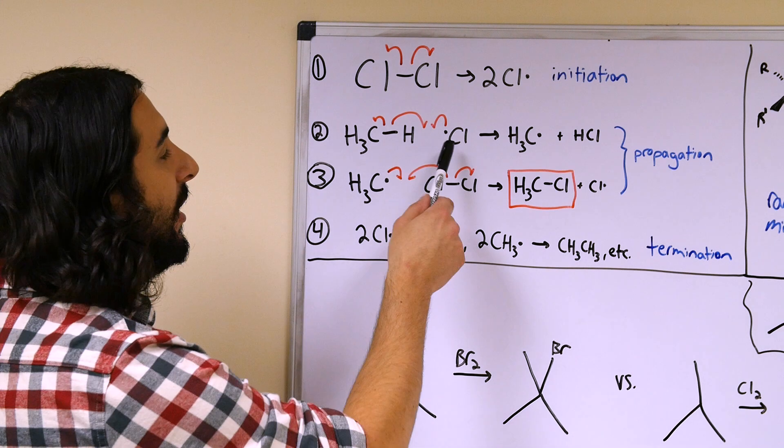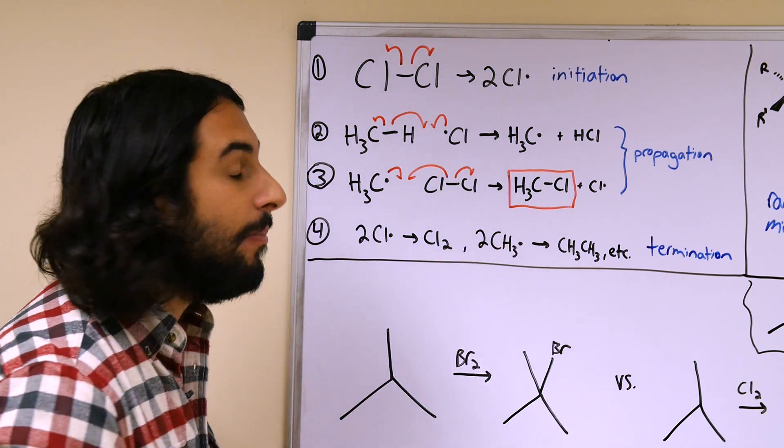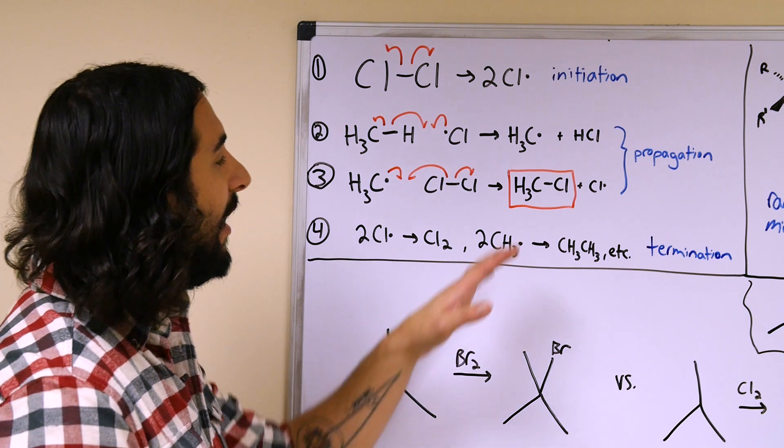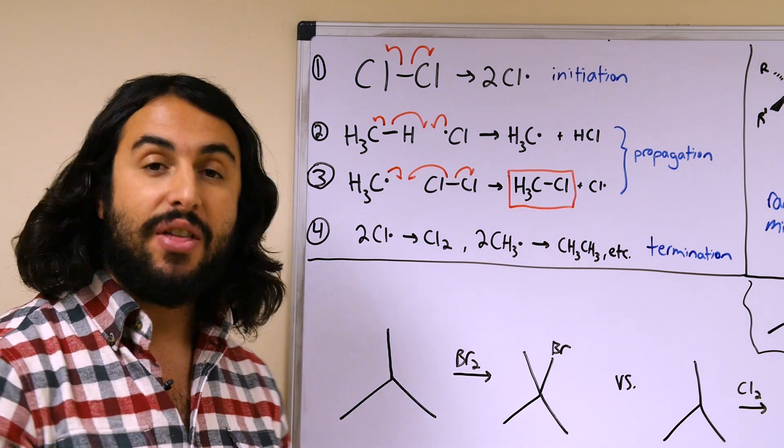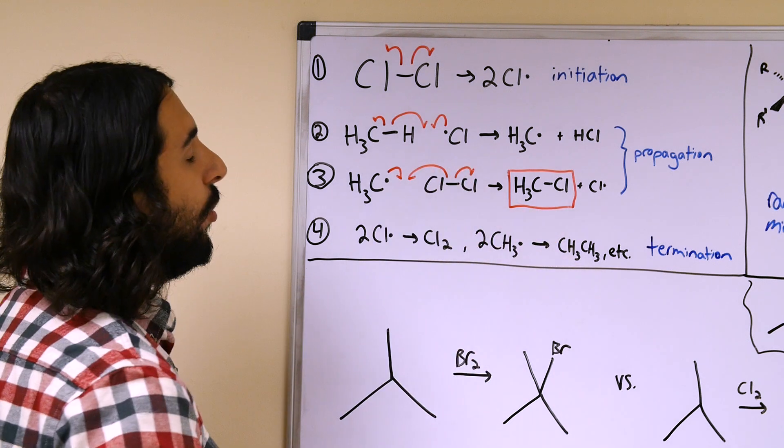It will go ahead and form the monochlorinated product. Now the monochlorinated product can then go ahead and react further. If this structure comes into contact with another chlorine radical, that chlorine radical can strip away another one of those three protons.